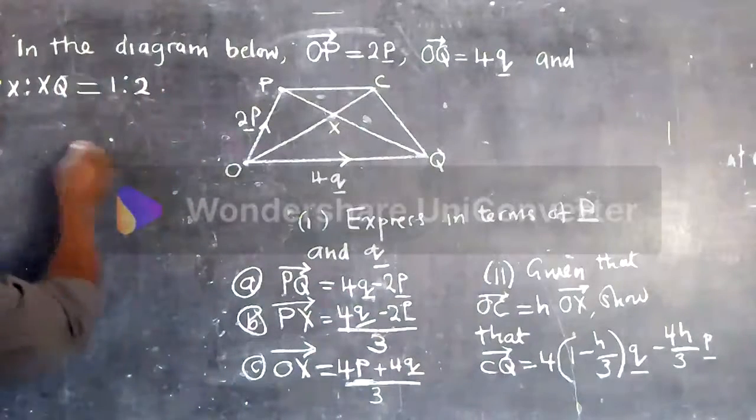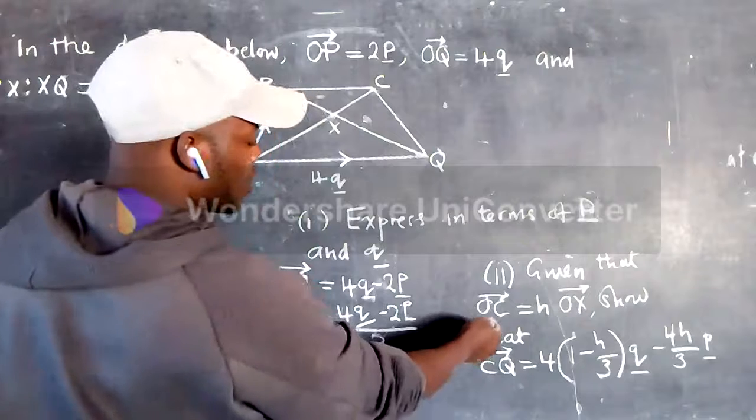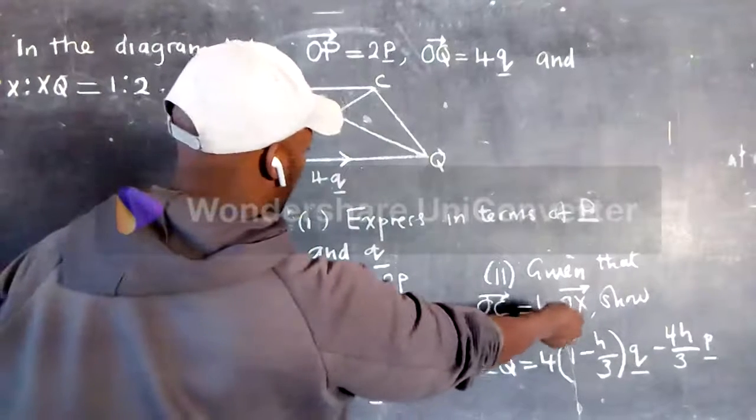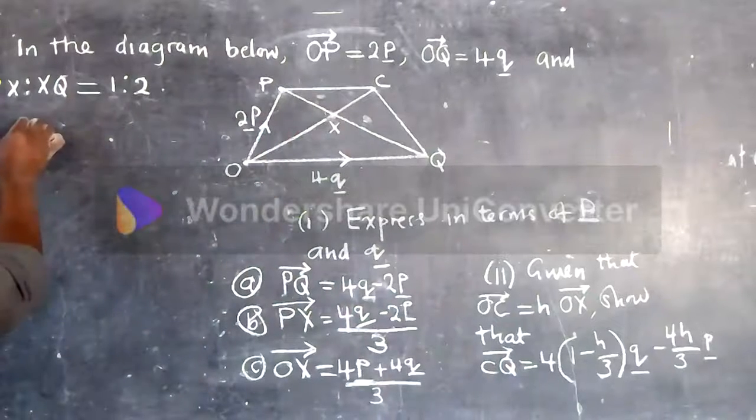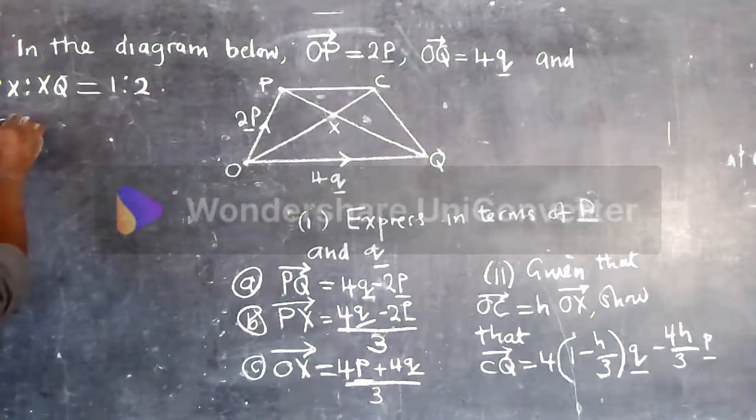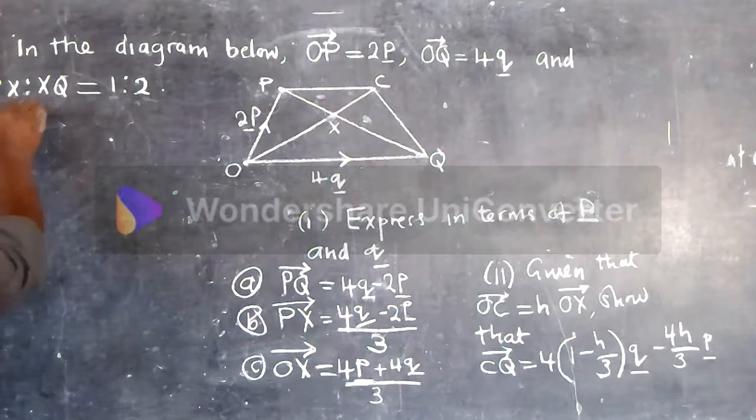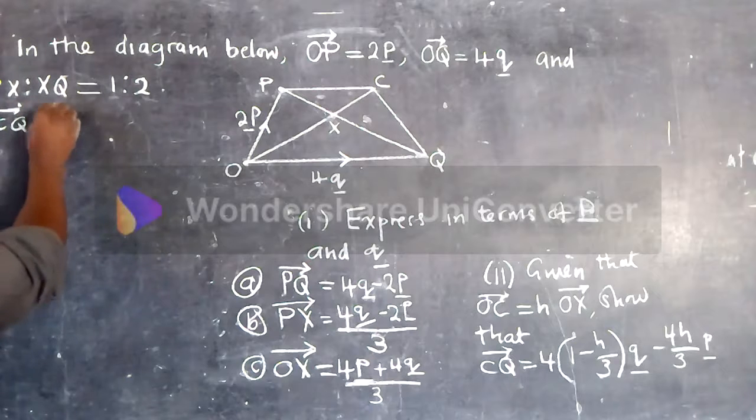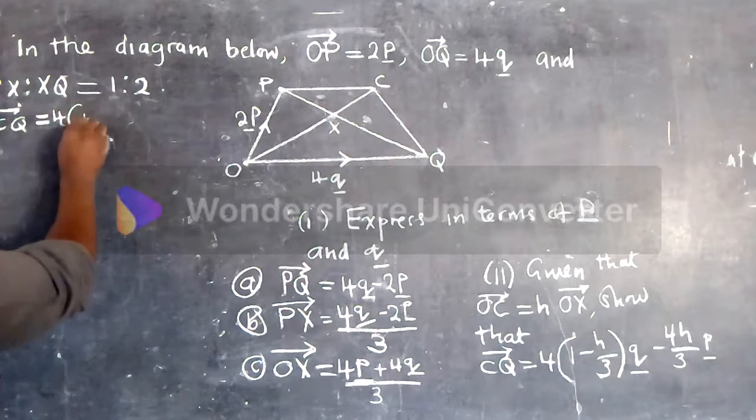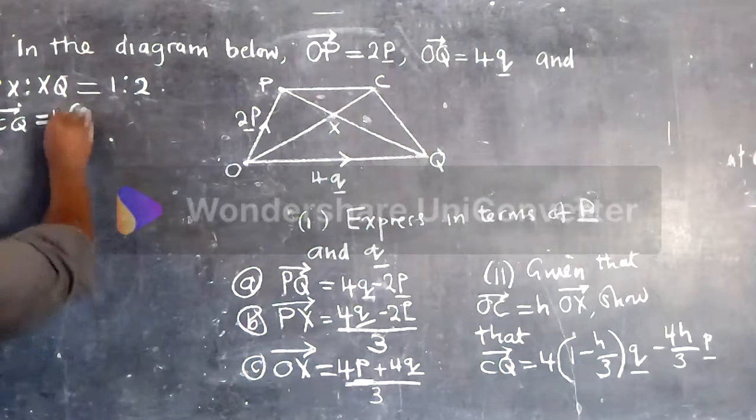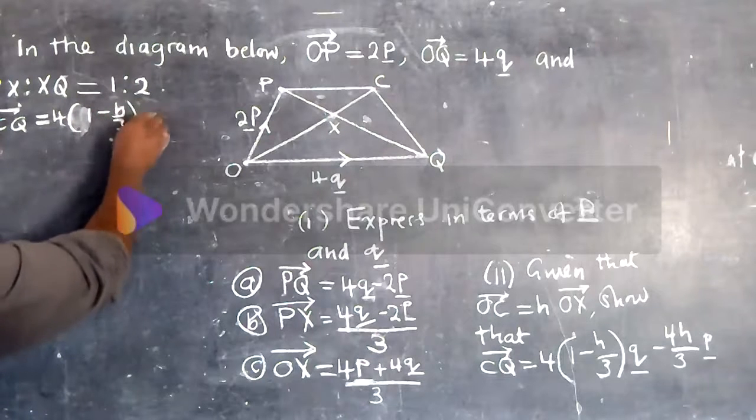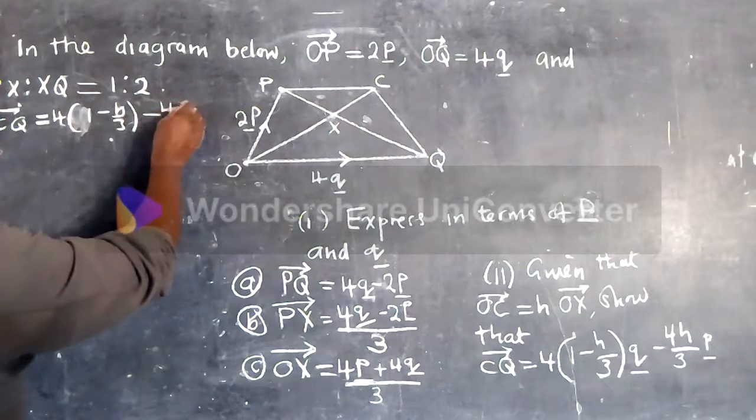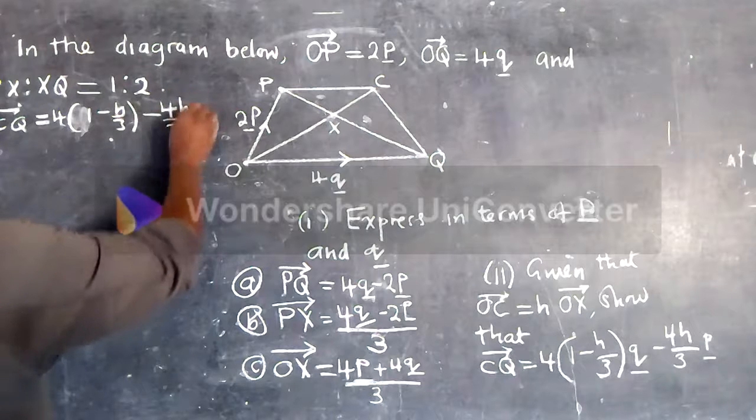So they are saying given that vector OC is equal to H. So let me put it here. C cube, vector C cube is equal to 4, open bracket 1 minus H over 3 minus 4H over 3P.